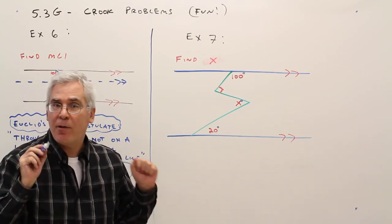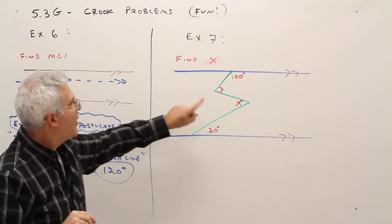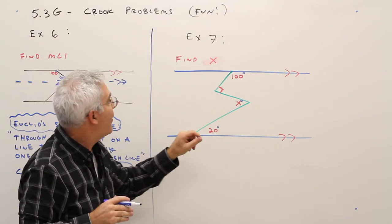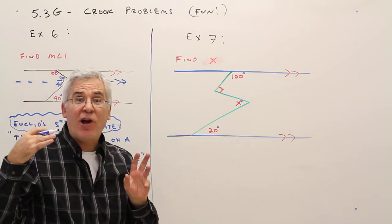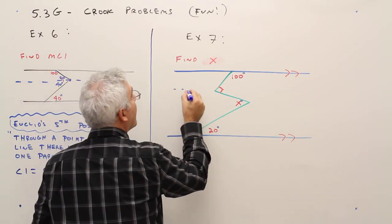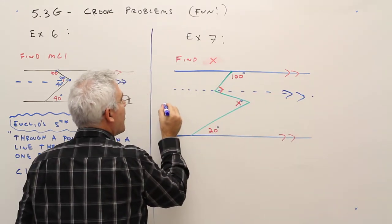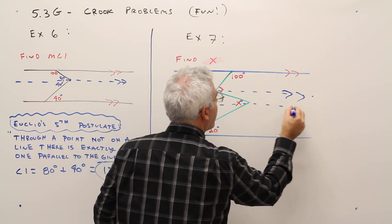Over here we have a double crook problem. Double fun. Okay, so find the measure of x. Again, it's going to be the angle inside there. We do have a right angle there. So now I'm going to draw a parallel line through that vertex and a parallel line through that vertex.